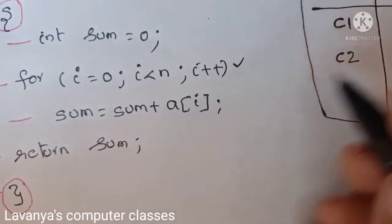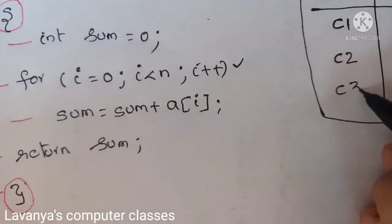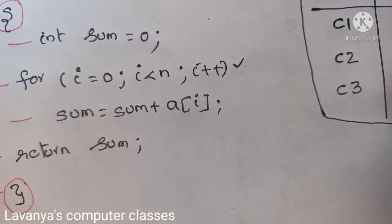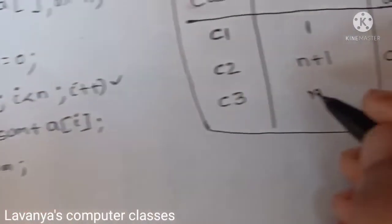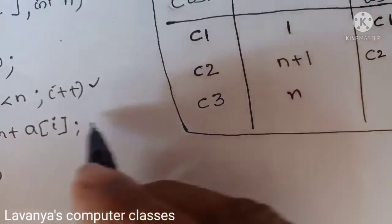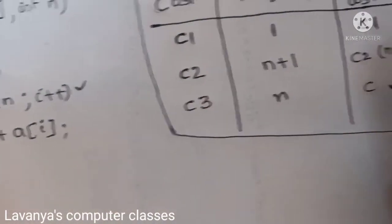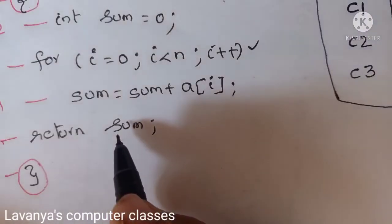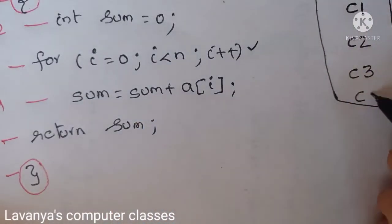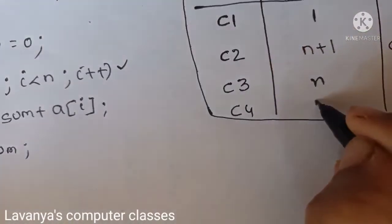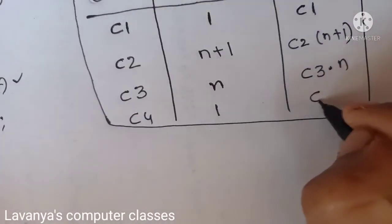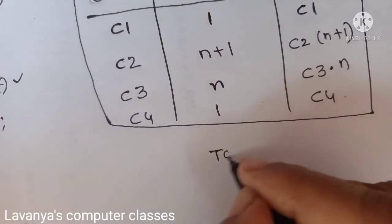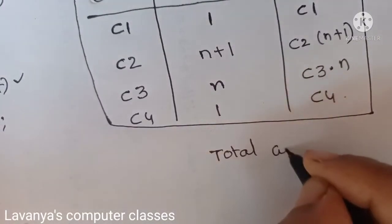The loop body statement sum = sum + a[i] has cost c3. It executes only when the condition is true, so the frequency is n, giving a total cost of c3 × n. The last line, return sum, has cost c4 and executes only once, so its total cost is c4 × 1 = c4.